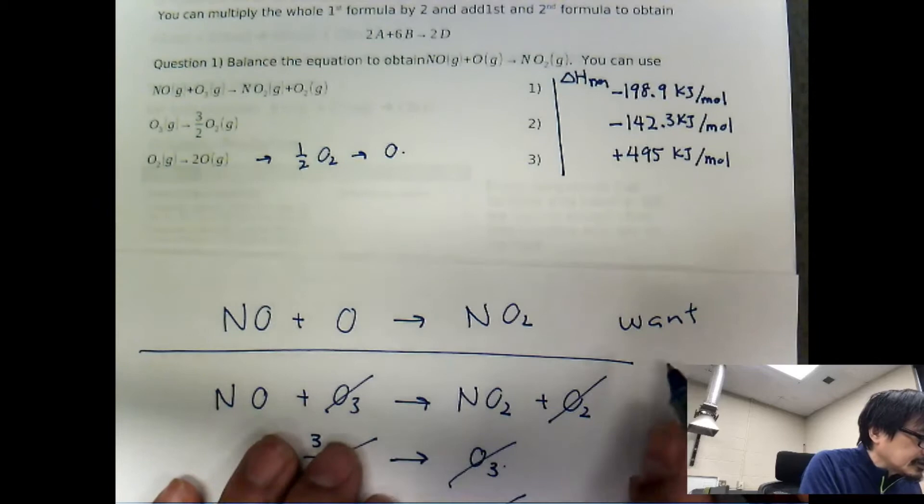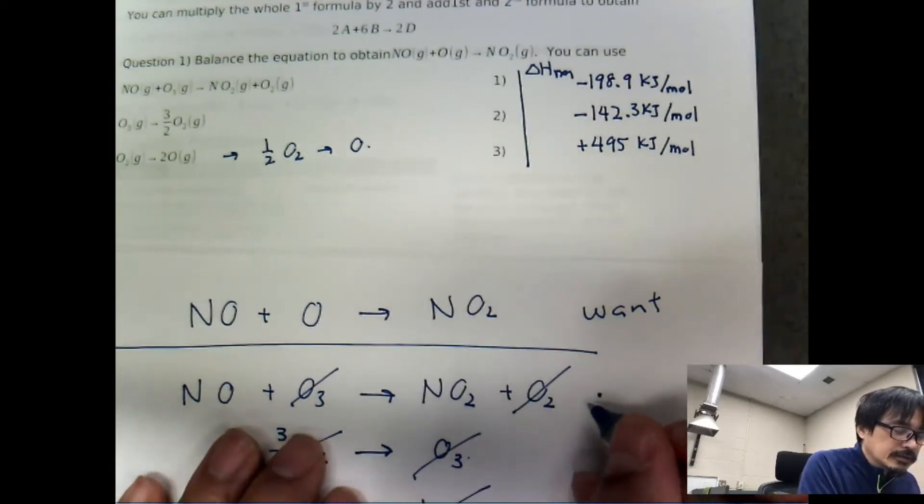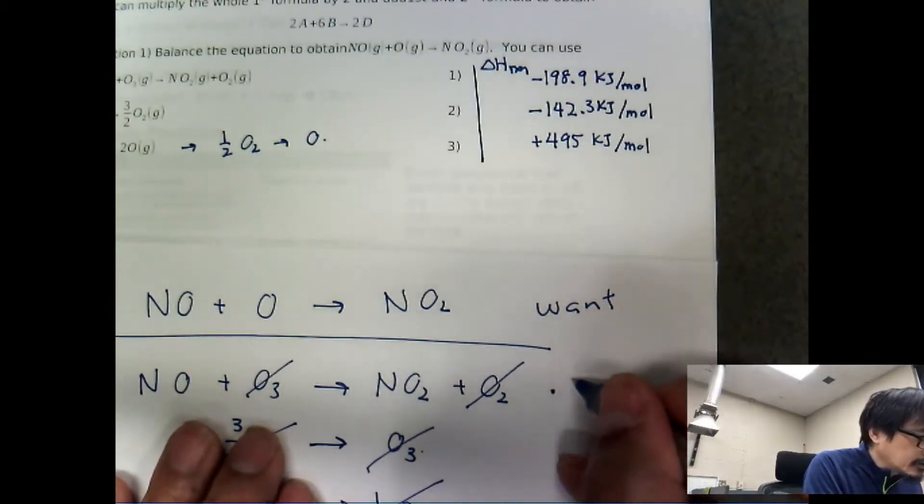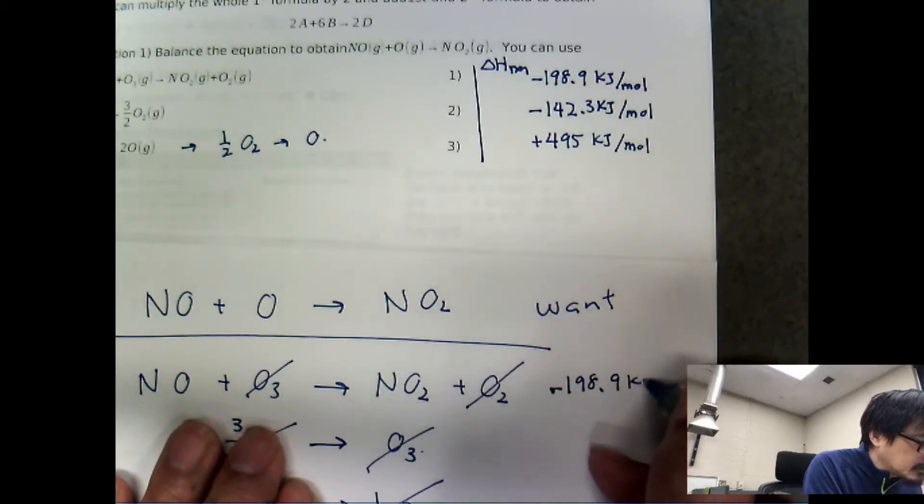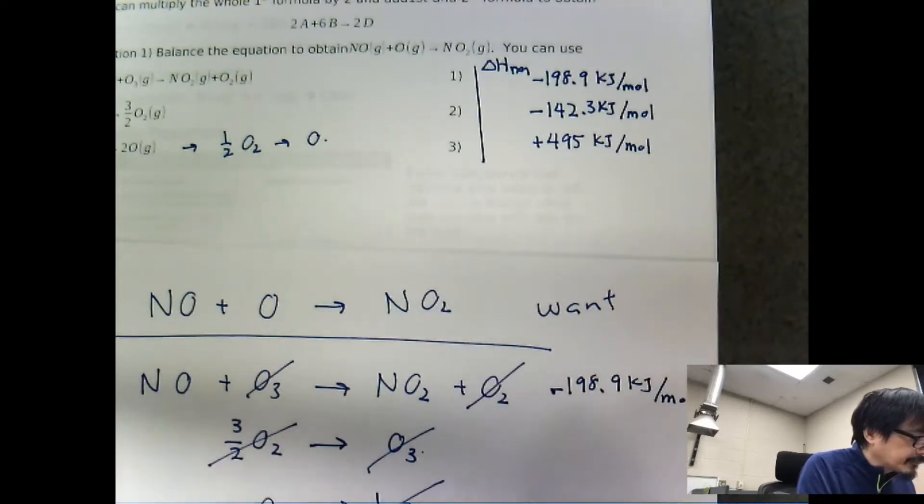Let me just say that for this reaction right here, just put it this way: minus 198.9 kJ per mole for this reaction. Okay,